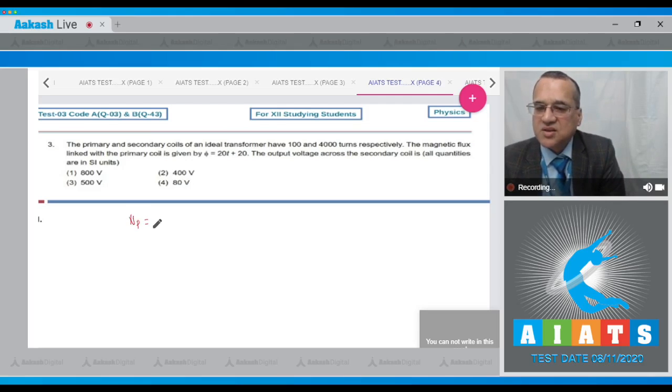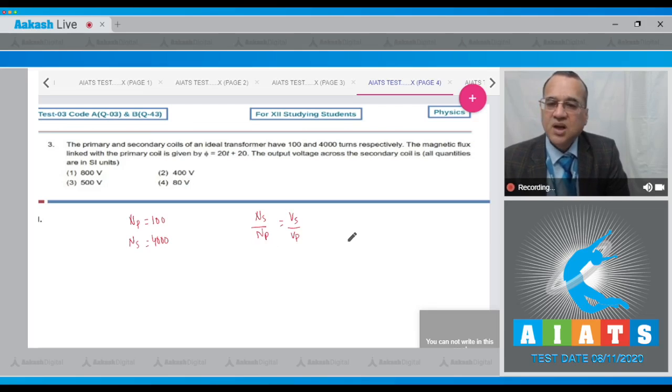Now what is given? Number of turns of the primary is equal to 100. Number of turns of the secondary is equal to 4,000. In case of transformer, the number of turns of secondary to the number of turns of primary is voltage across the secondary to voltage across the primary. Now how to find the voltage across the primary? From Faraday's law, E primary will be equal to the flux changing with respect to time, dt of phi. Phi is given equal to 20T plus 20, so that becomes equal to 20.